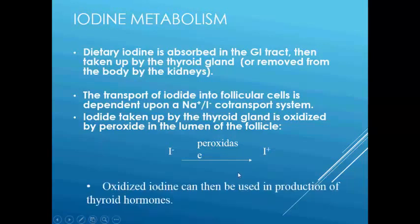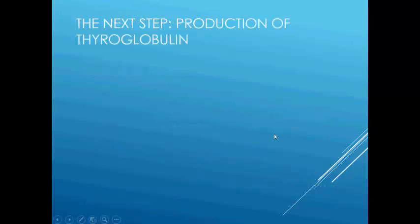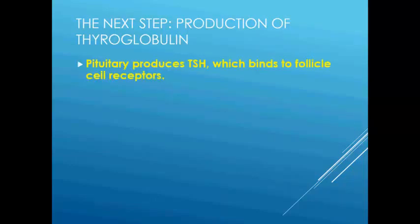Oxidized iodine can then be used in the production of thyroid hormone. This is how iodine metabolism takes place. The next step is the production of thyroglobulin.